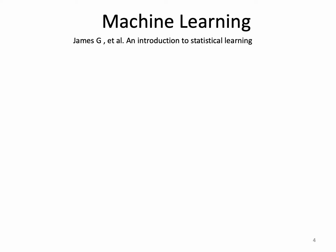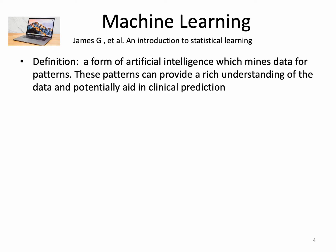So enter machine learning. The best textbook is An Introduction to Statistical Learning. Most machine learning you can actually do on your own laptop, though if your dataset is really large you might need stronger computing power. The best definition I've come across is that machine learning is a form of artificial intelligence that mines data for patterns. These patterns can provide a rich understanding of the data and potentially aid in prediction. But really, it's just a toolkit, and it takes a long time to know when it's the right tool for your research project.